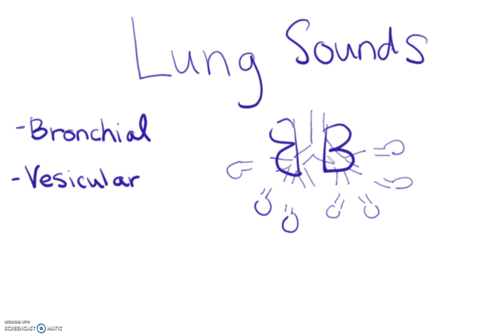Vesicular sounds are a little bit quieter and they're heard more in the periphery around your alveoli. The trick for remembering is bronchial makes sense because bronchial are by the bronchioles, and bronchi are at the top of the tree.